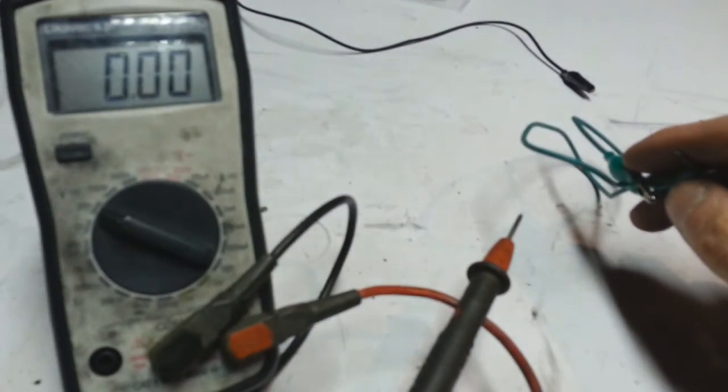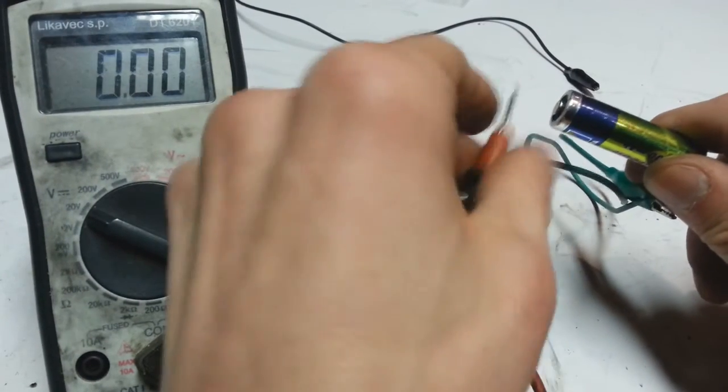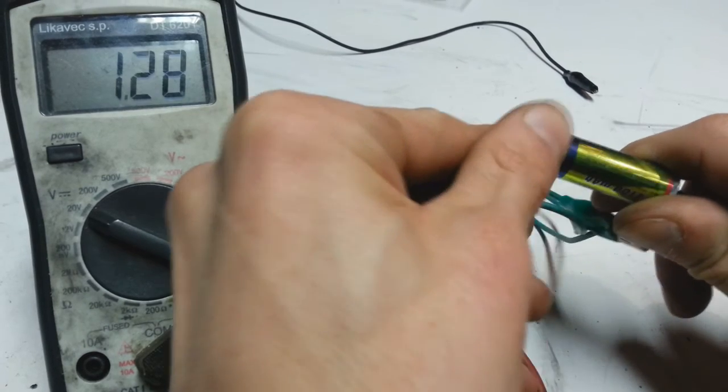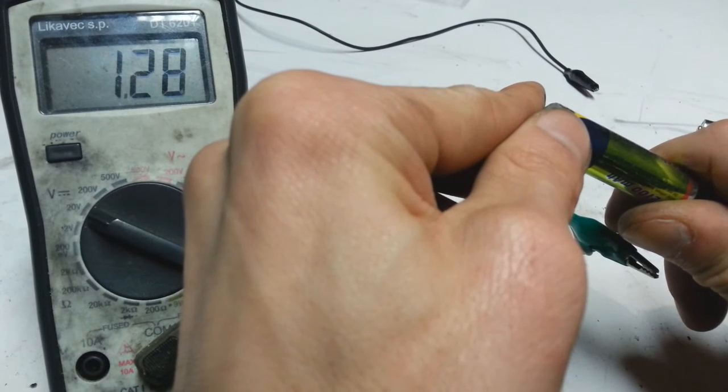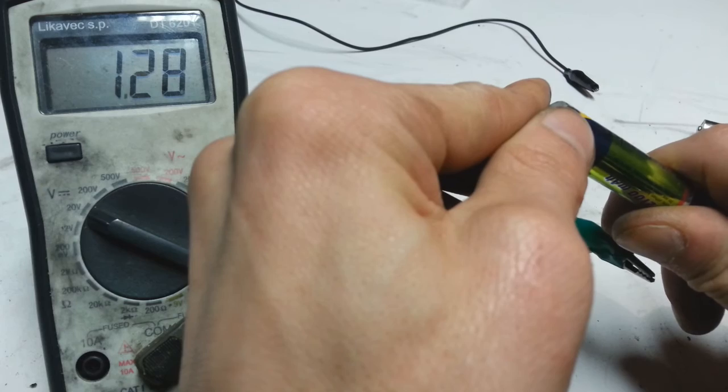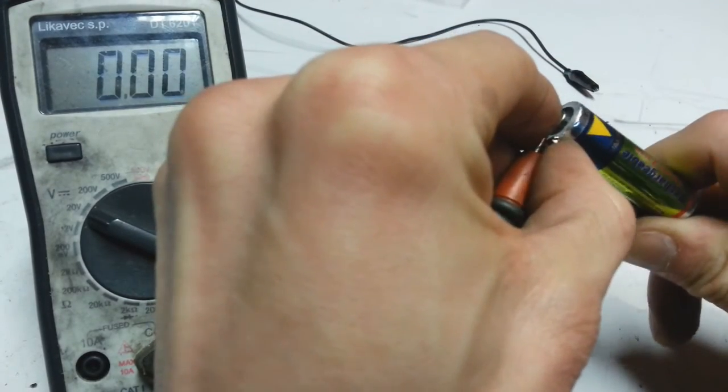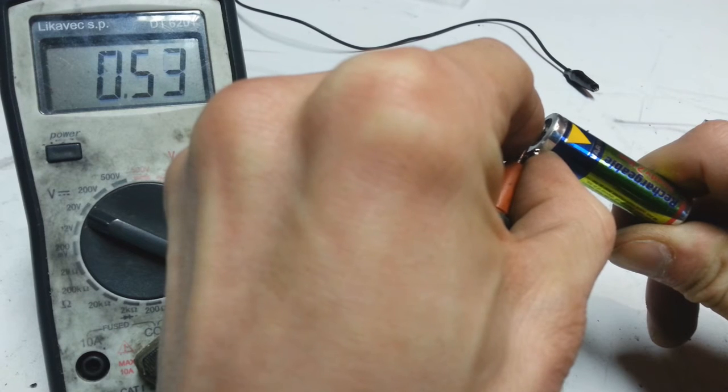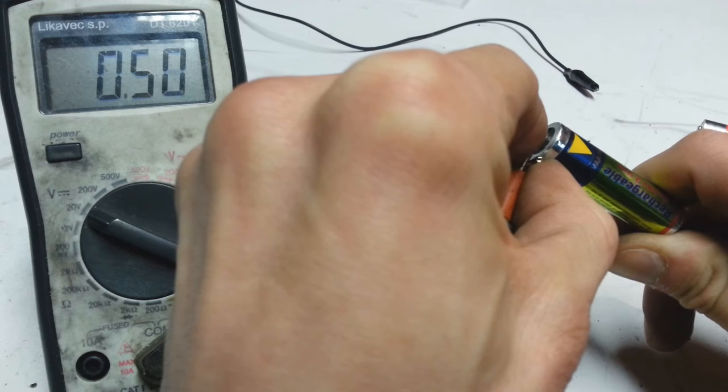And to the end, nickel metal hydride battery. The voltage of this battery is, oh come on, 1.28V. And the voltage of nickel metal hydride battery also drops to 0.5V.